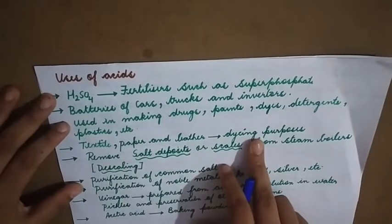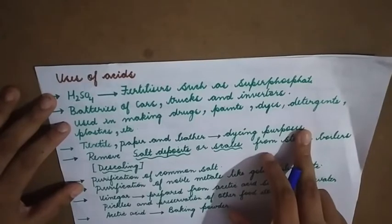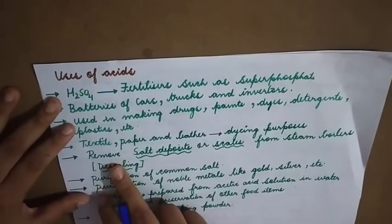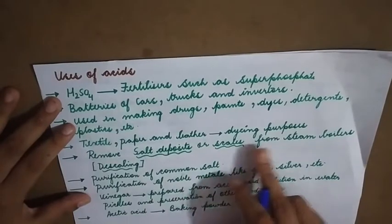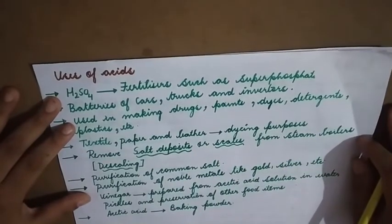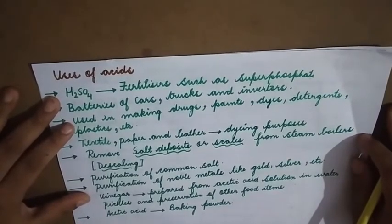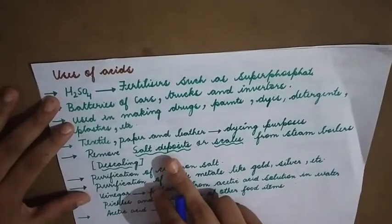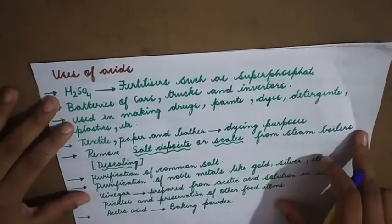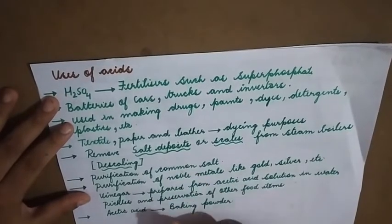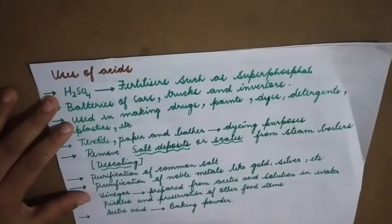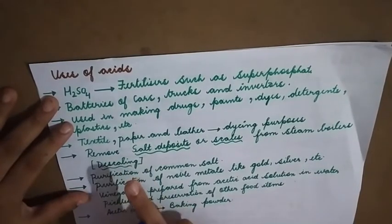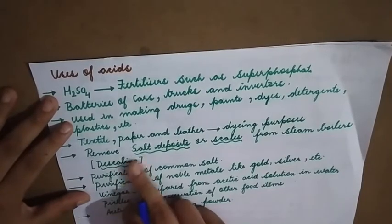What is the purpose of using acid in textiles? It is used for dyeing or coloring purposes — you have acidic dyes which are used for dyeing. Acid also helps to remove salt deposits or scales from steam boilers. Chemical reactions are carried out in large steam boilers, and during those reactions salts are generated, causing salt deposition. A process called descaling is done — that means salt is removed with the help of an acid.